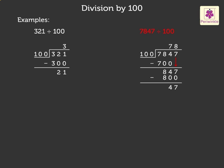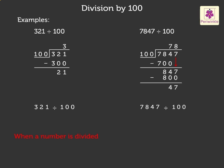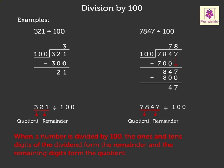Now look at the second example: seven thousand eight hundred forty-seven divided by one hundred. Here, we got the quotient as seventy-eight and remainder as forty-seven. In these examples, when we divided both the numbers by one hundred, the one's and ten's digits of the dividend formed the remainder and the remaining digits formed the quotient.